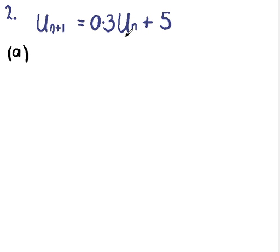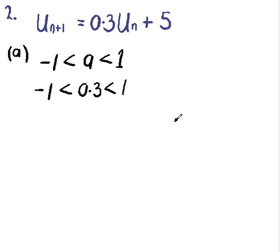Part (a) says explain why this sequence has a limit as n tends to infinity. Well, if you remember the rules of recurrence relations, any recurrence relation will have a limit if a lies between 1 and minus 1. So a is the multiplier 0.3, so 0.3 does in fact lie between 1 and minus 1. That means that this recurrence relation will tend to a limit.